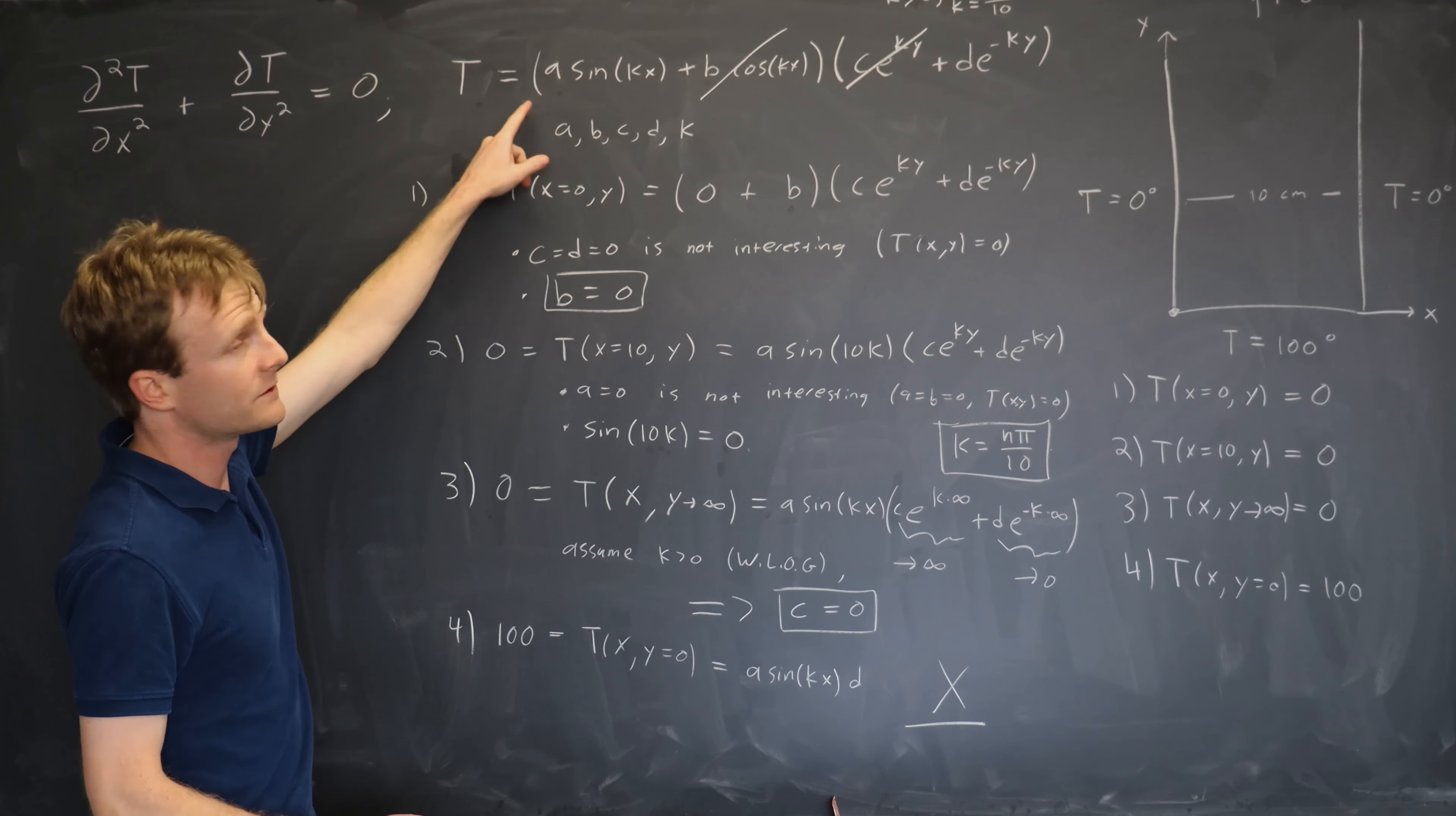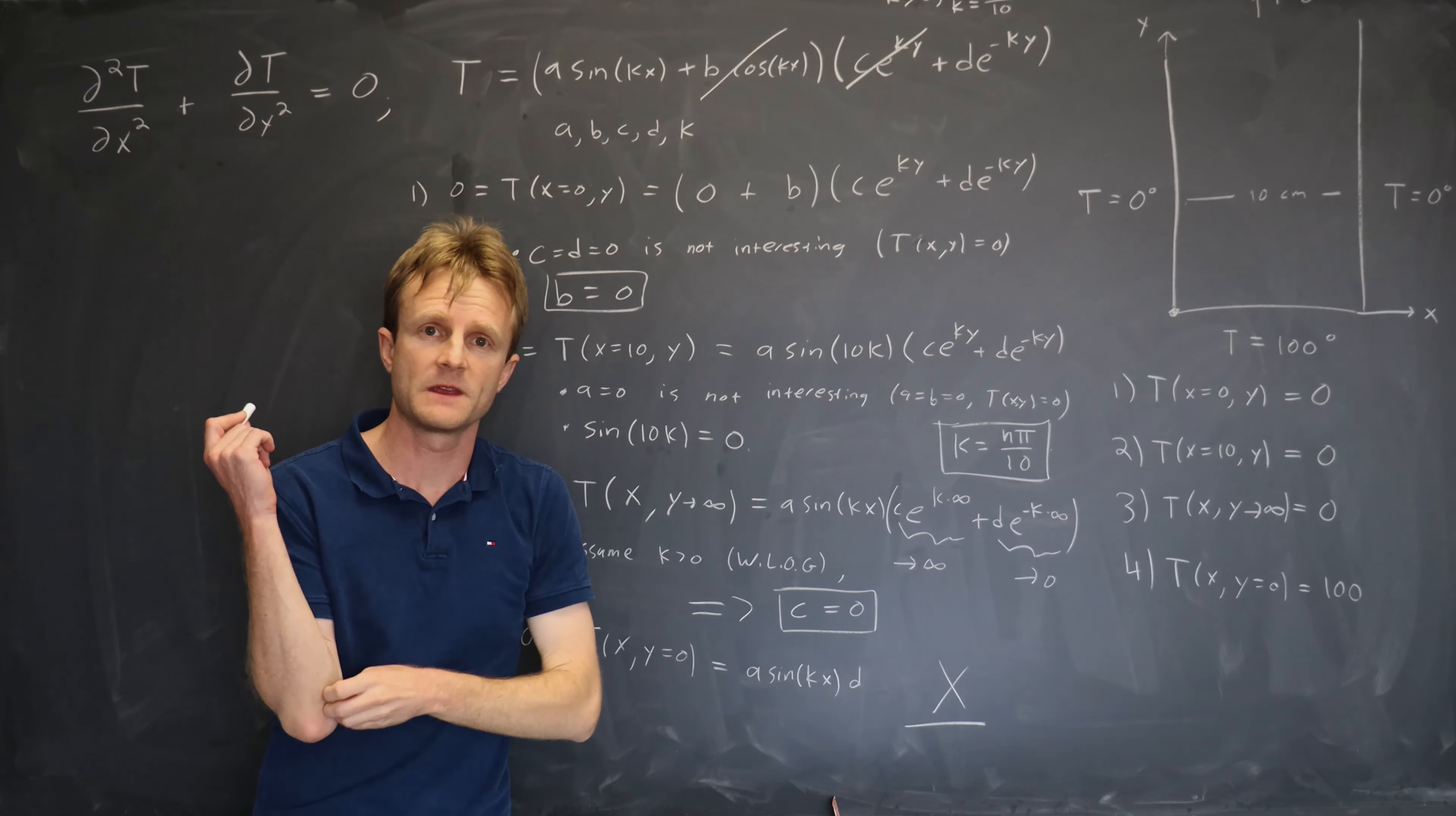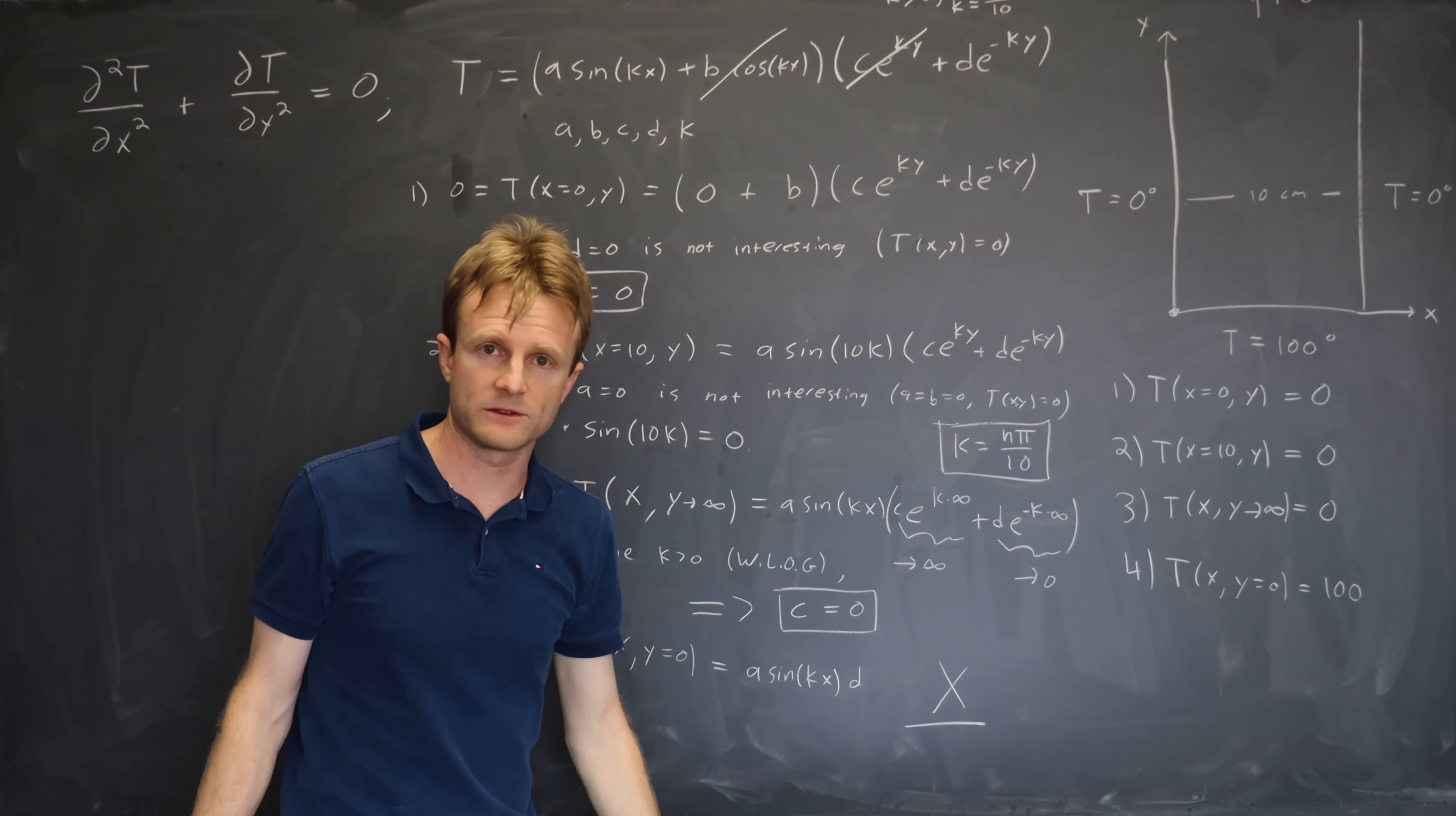Here's the beauty of separation of variables. Even though we can't use one of these solutions to satisfy all four of our boundary conditions, because this equation is linear, we can superpose two solutions and get a third. Take any two solutions of this equation, add them together, the sum will satisfy the equation because the derivative is a linear operation. So we're going to use superposition, and we're going to try not just one solution, in fact not just two or three or four, but an infinite number, an infinite sum of product solutions. And we're going to use that to satisfy the final boundary condition.